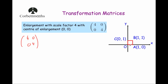Let's start with the point at the origin, the point 0, 0. Because this is an enlargement with the centre of enlargement at the origin, this point should stay where it is. Multiplying the first row by the column: 4 times 0 is 0, 0 times 0 is 0, adding them together is 0. Then the second row: 0 times 0 is 0, 4 times 0 is 0, adding them together is 0. So the point at the origin stays where it is.